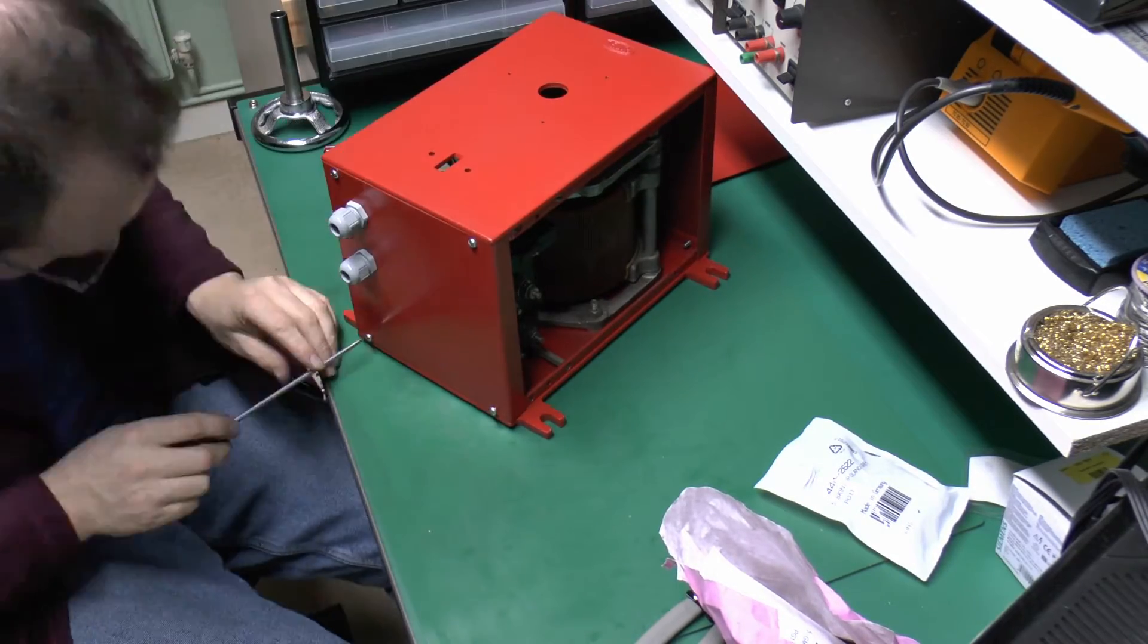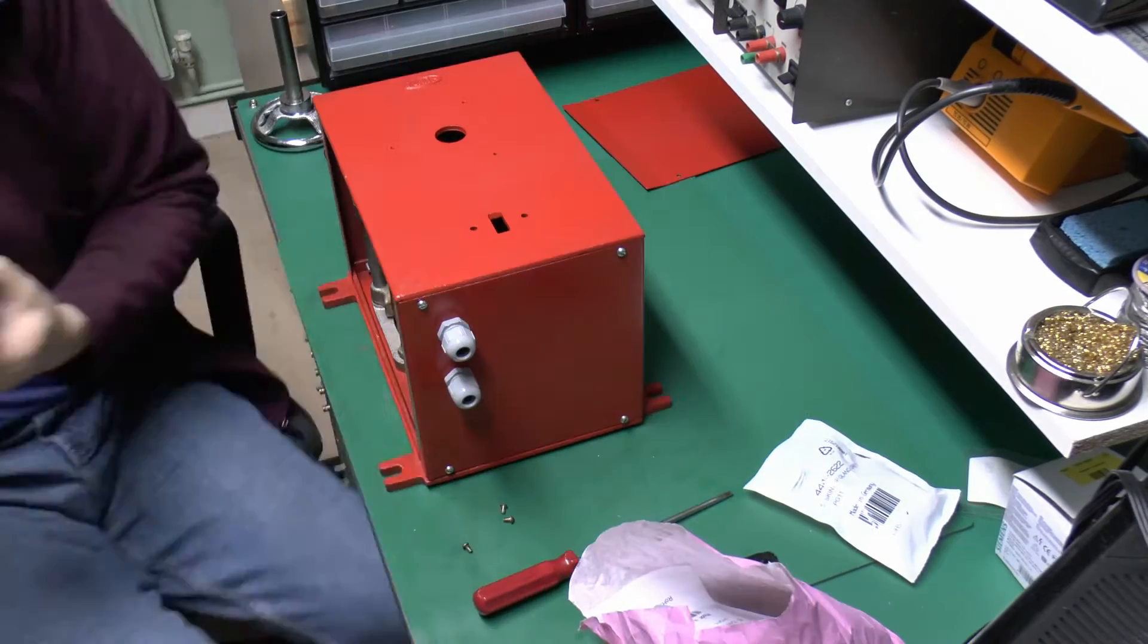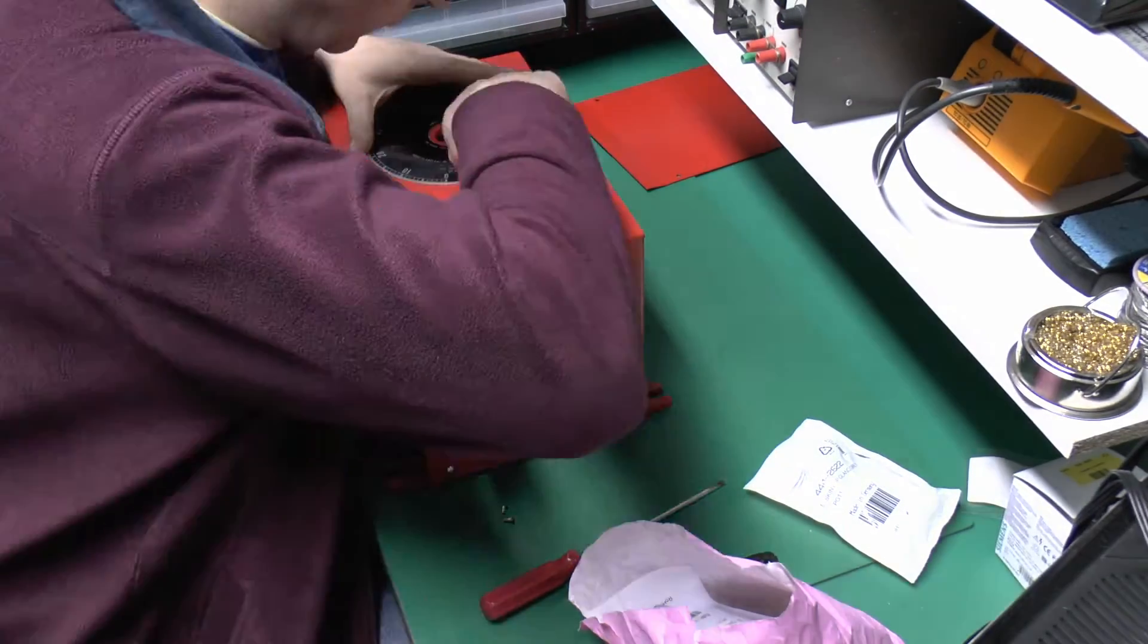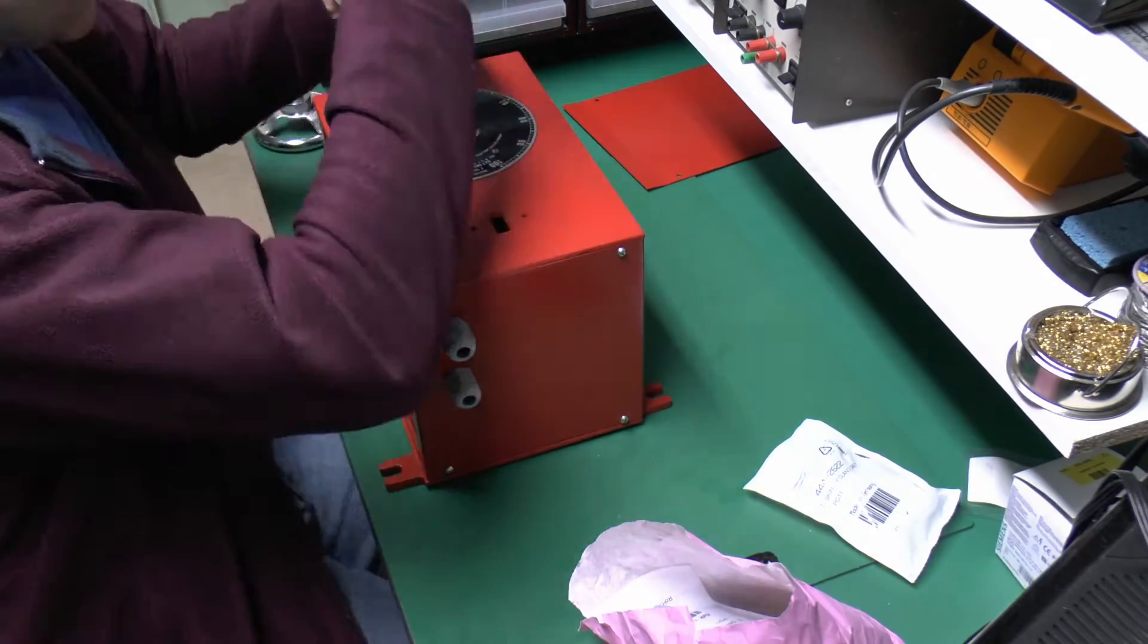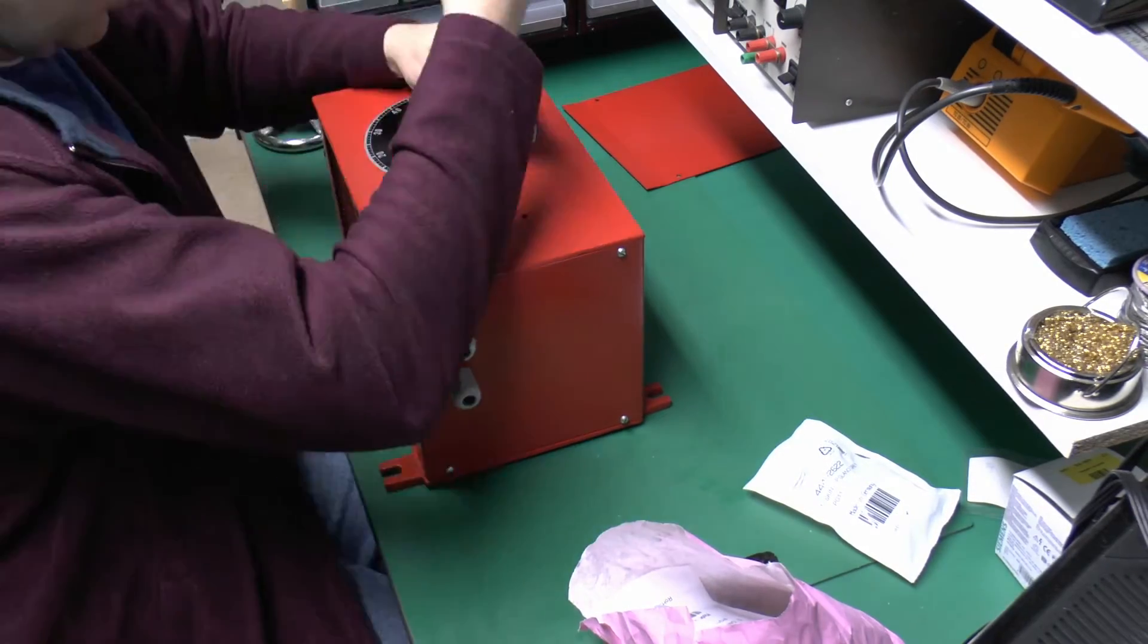That's all assembled and this is the top plate. Just put a bit of silicone lubricant on the back so it doesn't stick onto the top of the cabinet. It just fixes with the three screws.